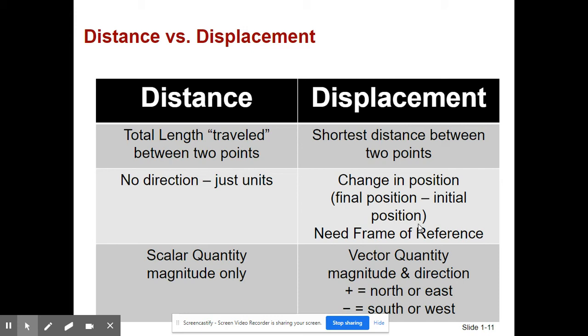Displacement is the shortest distance between two points, it's a change in position, final position minus initial position. So we always need a frame of reference, we need to know where we started. It's a vector quantity, it has magnitude and direction. When we're only talking about one-dimensional motion or linear motion, we always say that north or east is considered the positive direction and south or west is the negative direction.